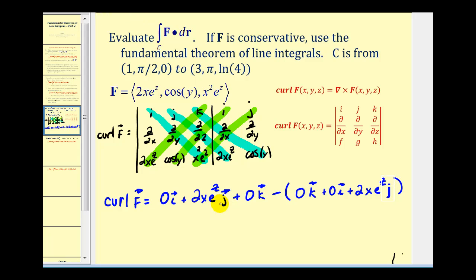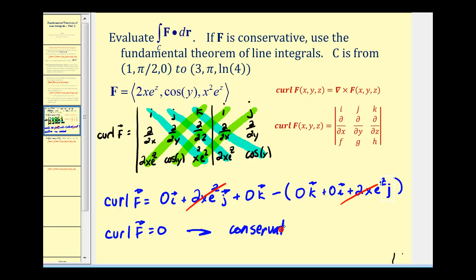So the curl is equal to zero, which tells us that the vector field is conservative. Now we can use the fundamental theorem of line integrals to evaluate this, as long as we can determine the potential function. Let's go ahead and do that on the next page.